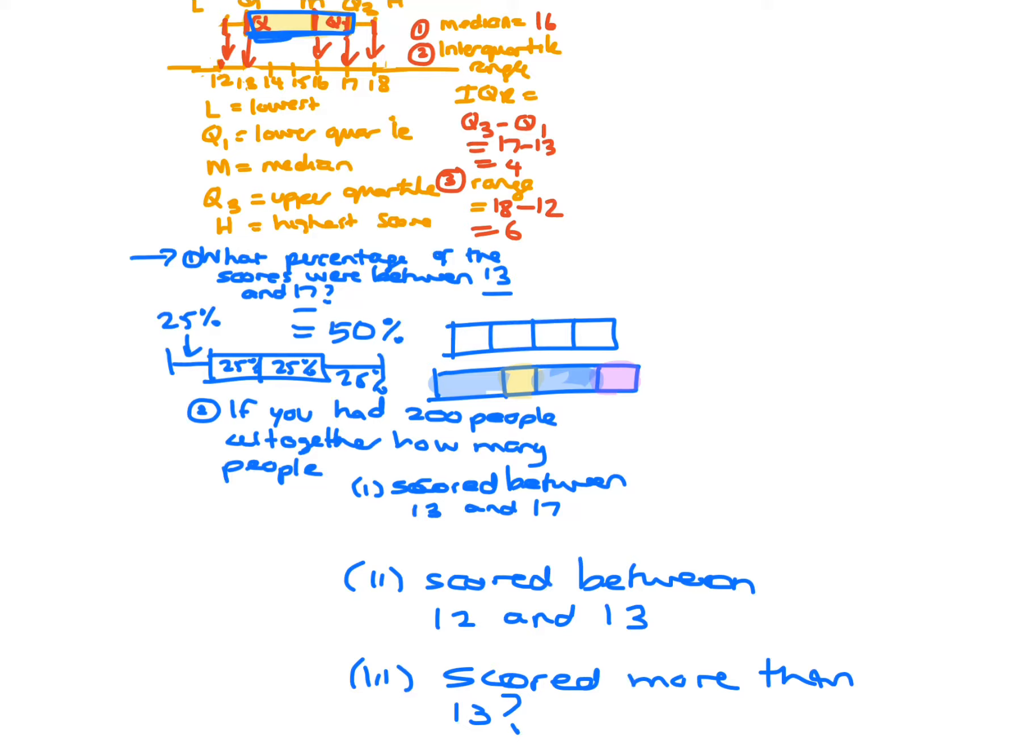So how many scored between 13 and 17? So 13 and 17, if you look at that box and whisker plot, 13 to 17 was just, because this was 12, 13, that's 16, 17, and this was 18, those were your numbers. So 13 and 17, that's your middle 50%. So it was 50% times the 200, and 50% times 200 is just 100 people.